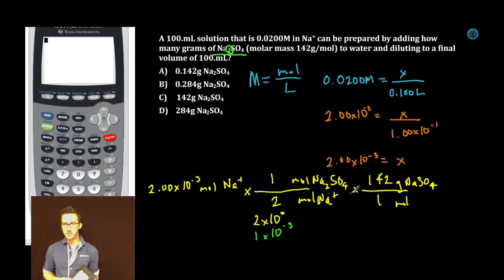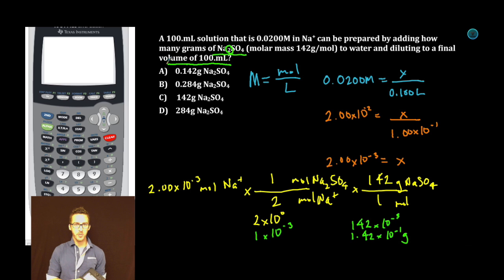All right, let's take it home. 1 times 10 to the minus 3 times 142. Again, that's going to give me 142 times 10 to the minus 3. Now, it's pretty shady scientific notation. We have to move our decimal two places. So 1.42 times 10 to the minus 1 grams is our final answer. As I look at my answer choices, none of these are in scientific notation, but this is the same as 1.42 times 10 to the minus 1. Boom!